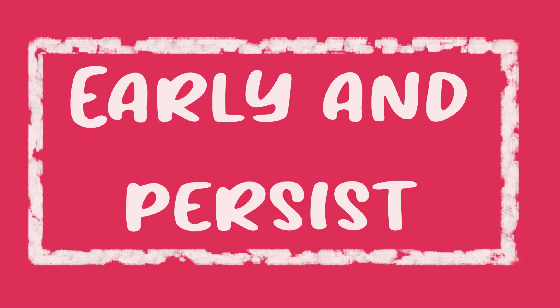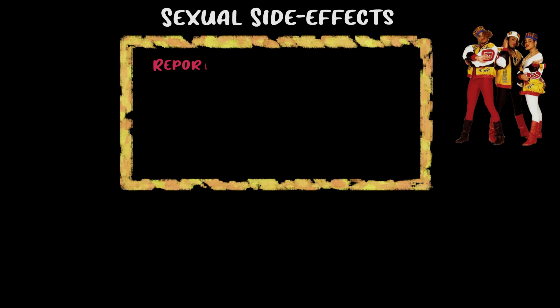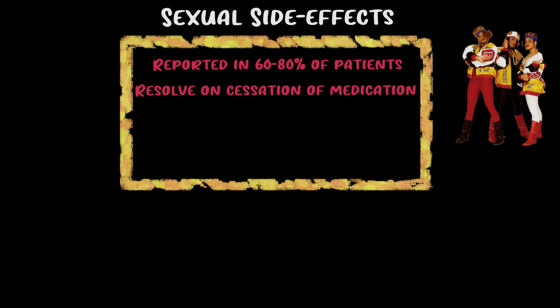Now for side effects that occur early but tend to persist — patients should be informed these are not expected to go away. The most anticipated: sexual side effects. Any medication inhibiting serotonin reuptake will cause sexual dysfunction, noticed by about 60 to 80% of patients. The vast majority resolve once the drug is stopped, but rare reports exist of lasting months to years. About a third of patients experience no distress, a third find it tolerable, and a third find it quite bad.